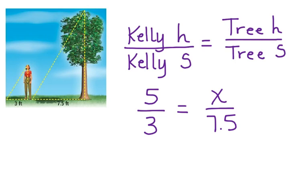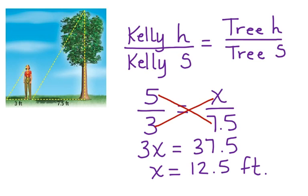We can cross multiply to solve this proportion. 3x equals 37.5, x equals 12.5 feet. This is the height of the tree.